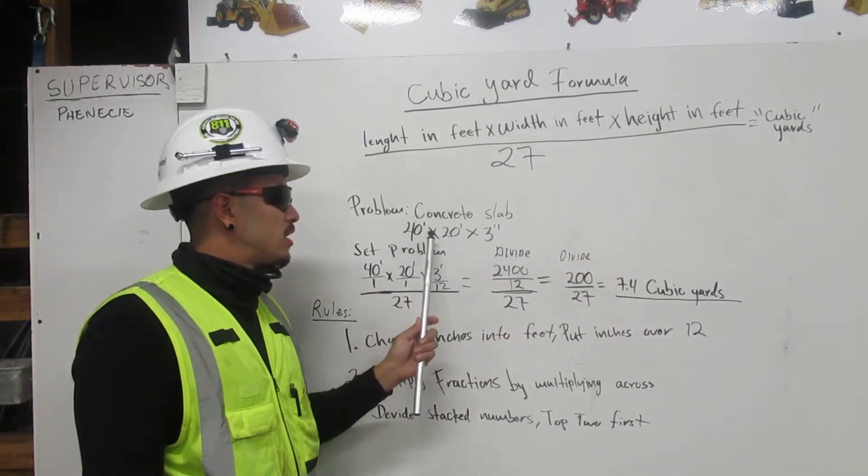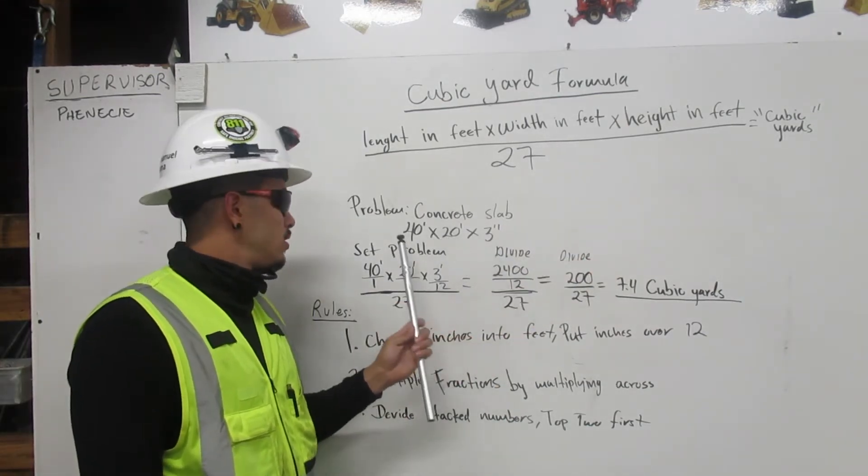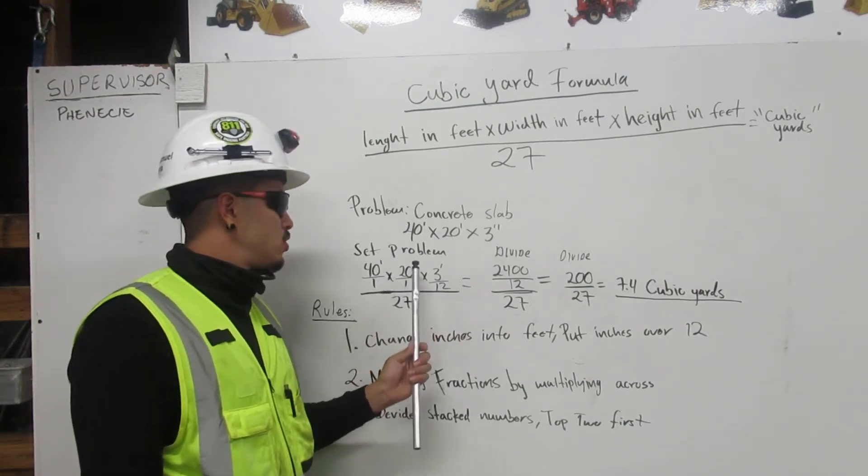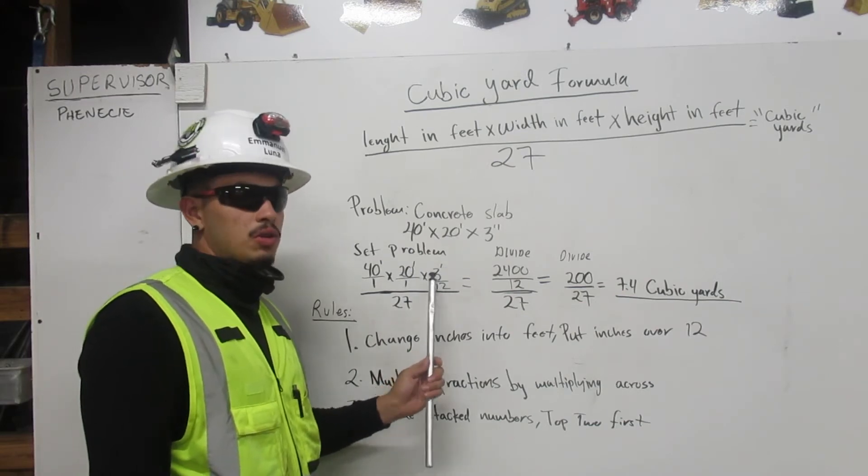Here's the problem. 40 feet times 20 feet times 3 inches. You set up the bottom which is 40 feet over 1 times 20 feet over 1 times 3 feet over 12.